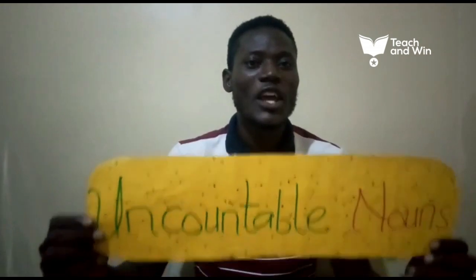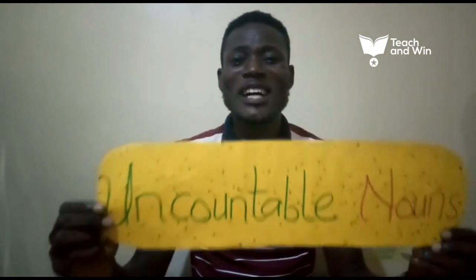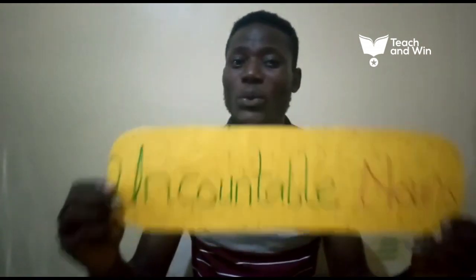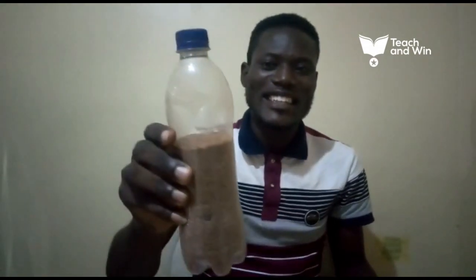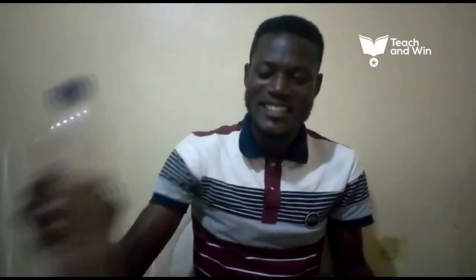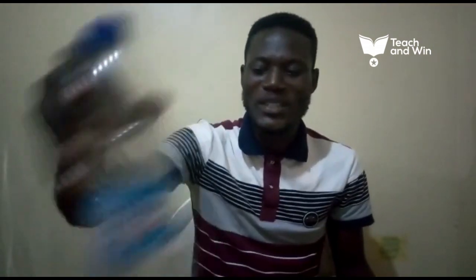The other type of common noun is the uncountable noun. Uncountable nouns are those nouns that we cannot count. They don't have specific numbers. Examples: we have sand here, we have stones here, and lastly, we have water. We cannot count water.